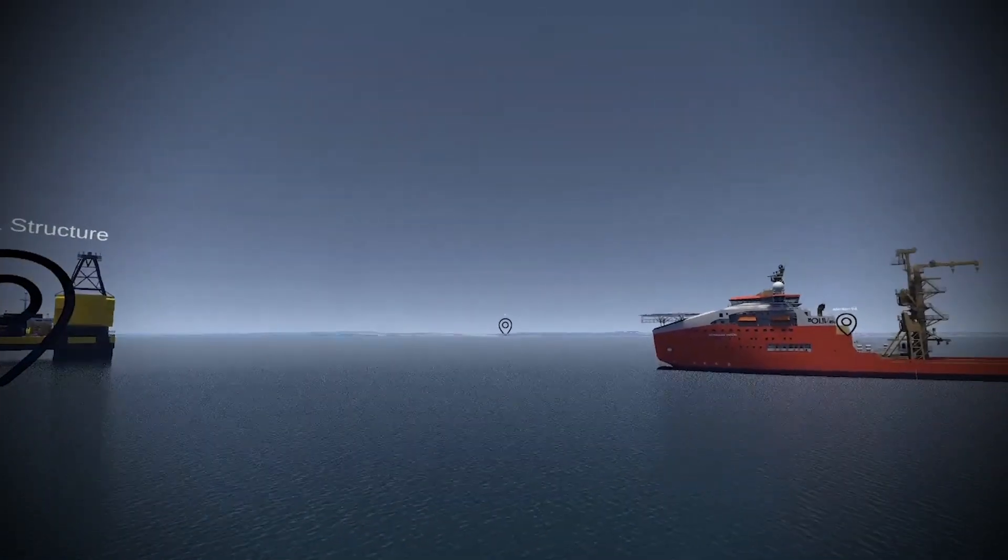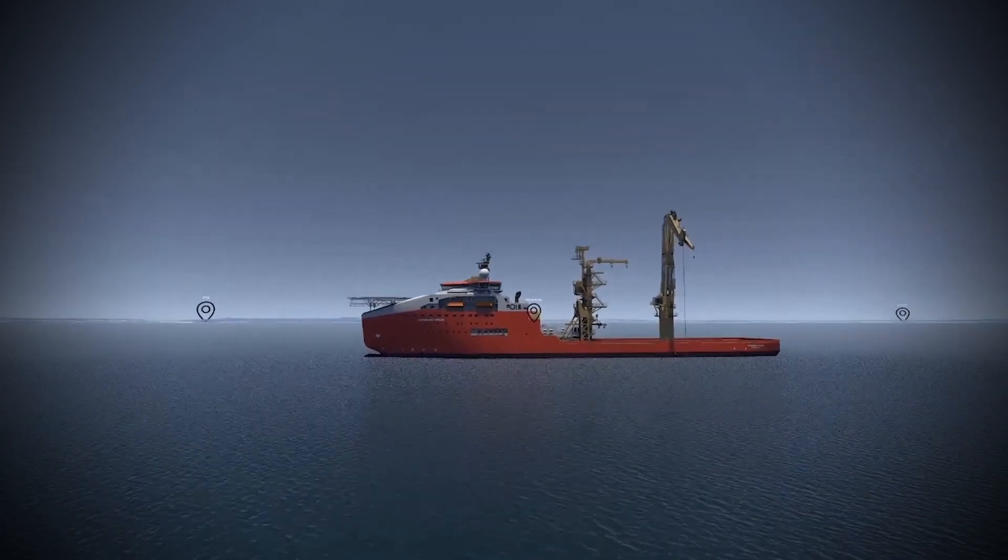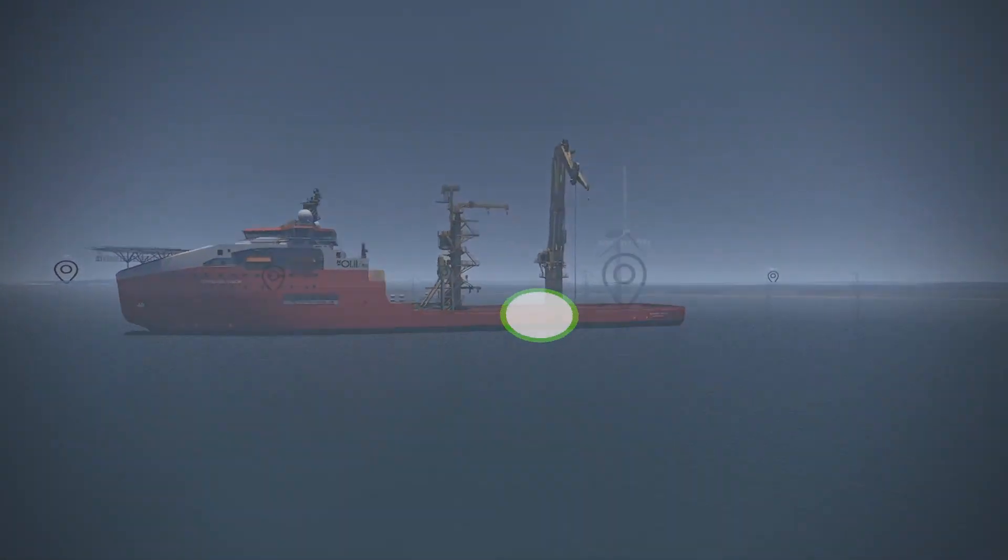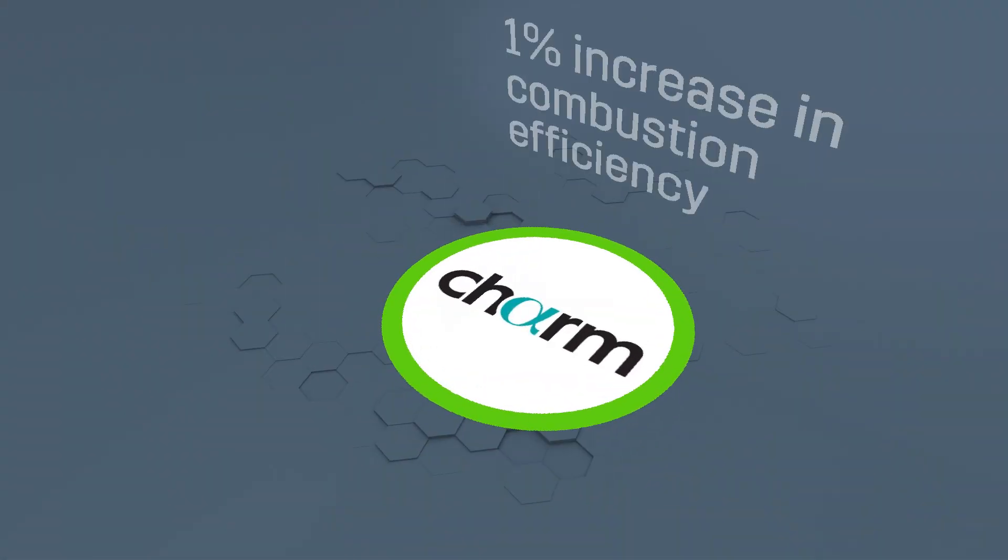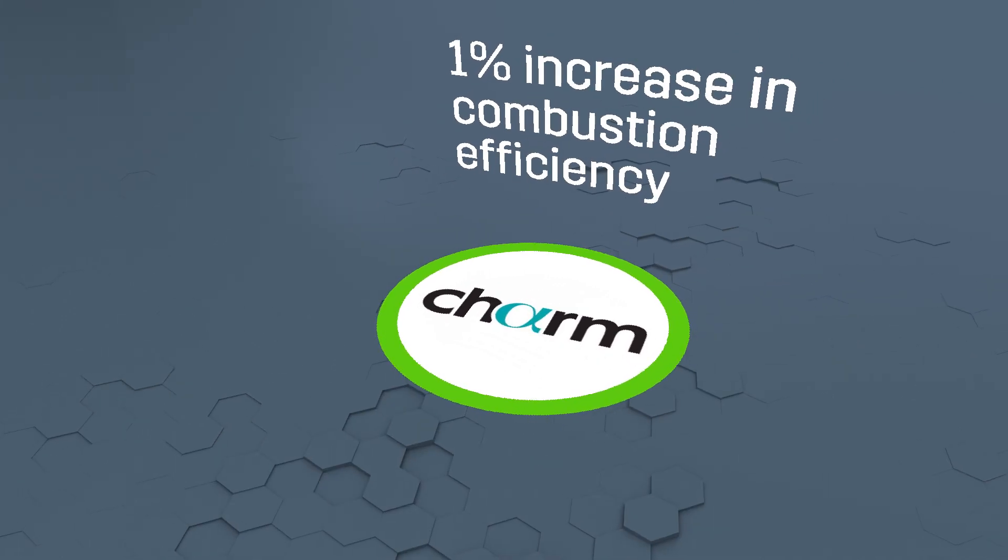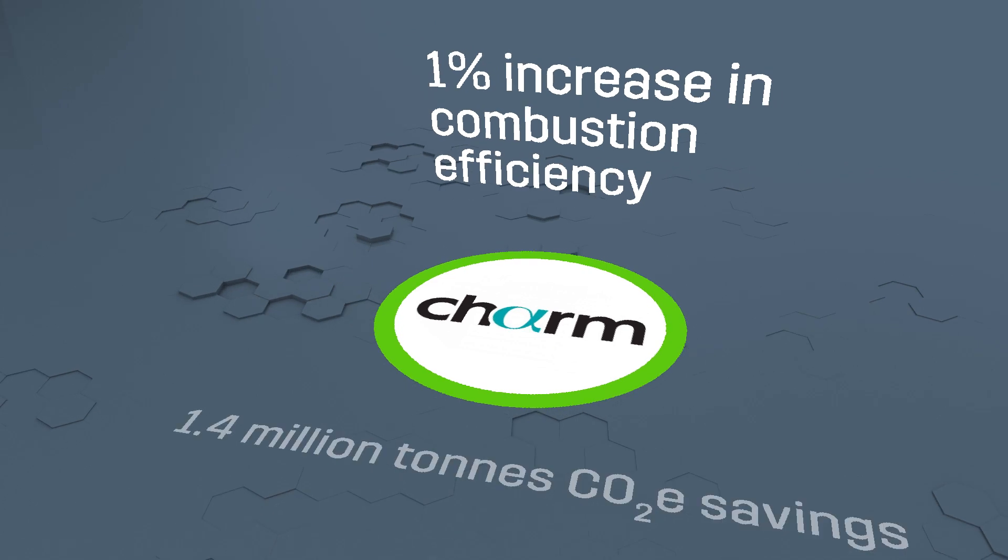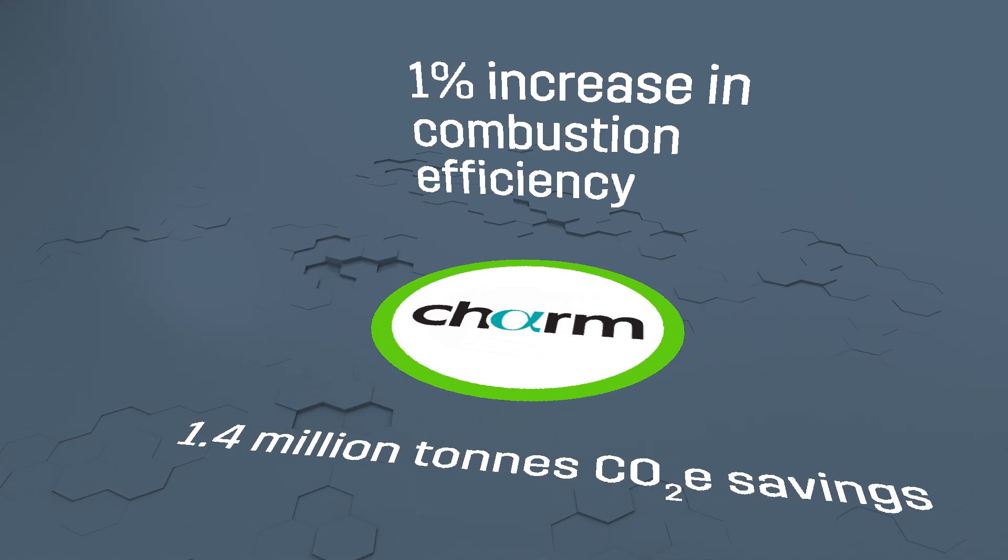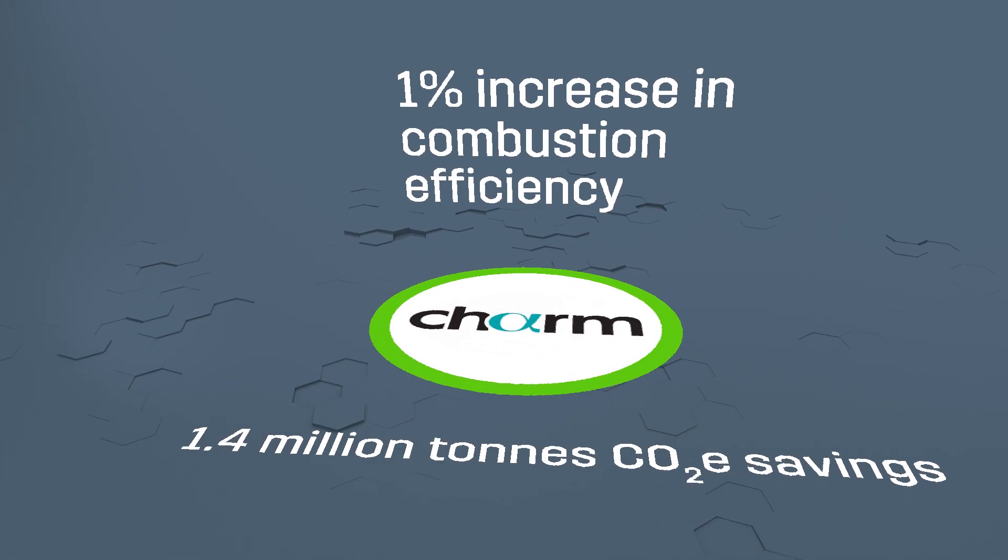Based on the North Sea Transition Authority's Emissions Monitoring Report, if CHARM Combustor was to provide a 1% efficiency increase in flare combustion, an overall basin-wide emission saving of 1.4 million tonnes of CO2 or equivalent could be achieved.